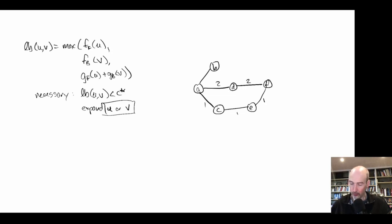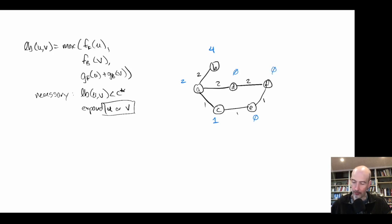We write the forward heuristic in blue: node A has a forward heuristic of four, another node has two, then one, then zero, zero, and zero. The backwards heuristic is written in purple: one, zero, zero, zero, two, and one.